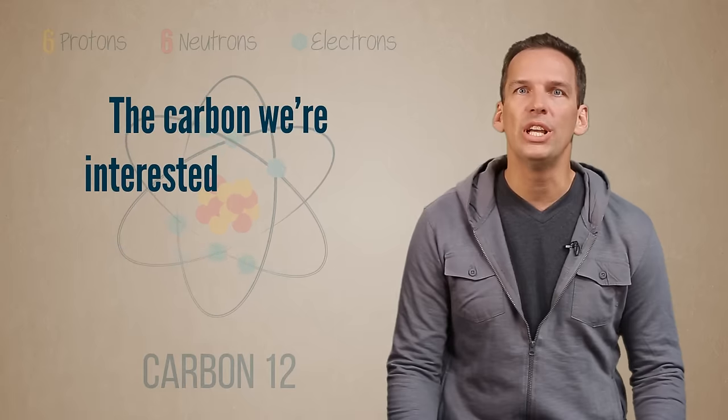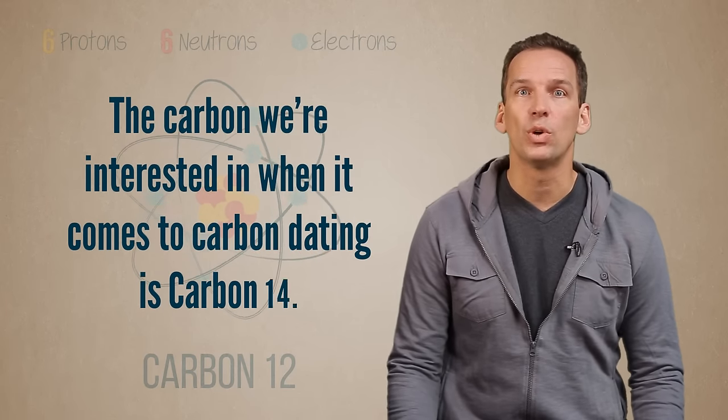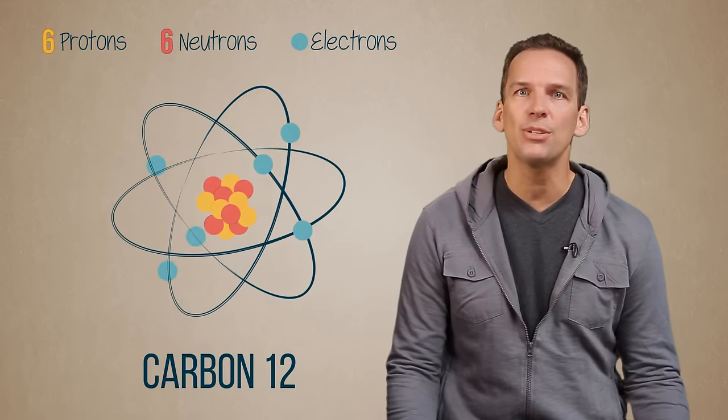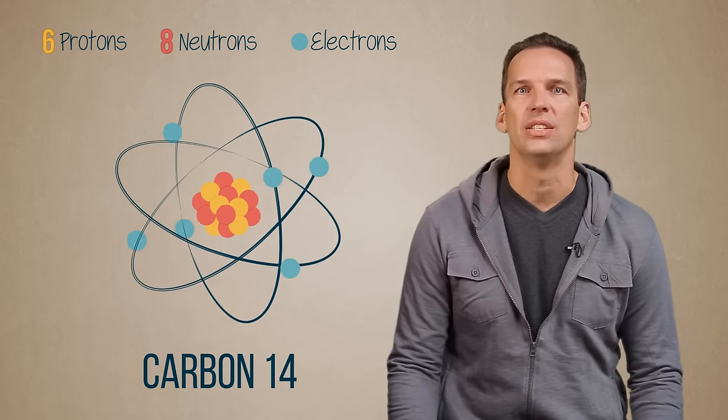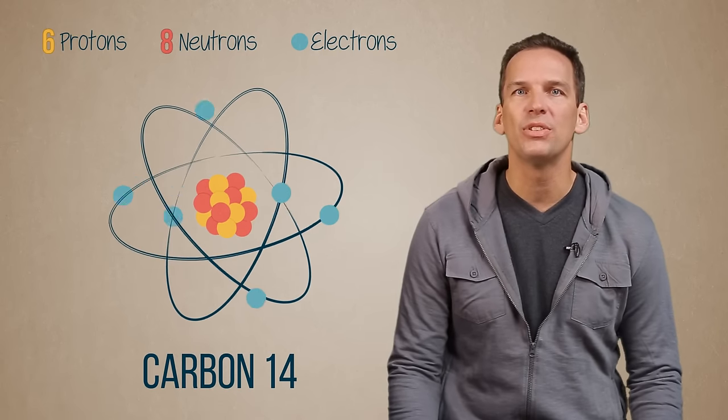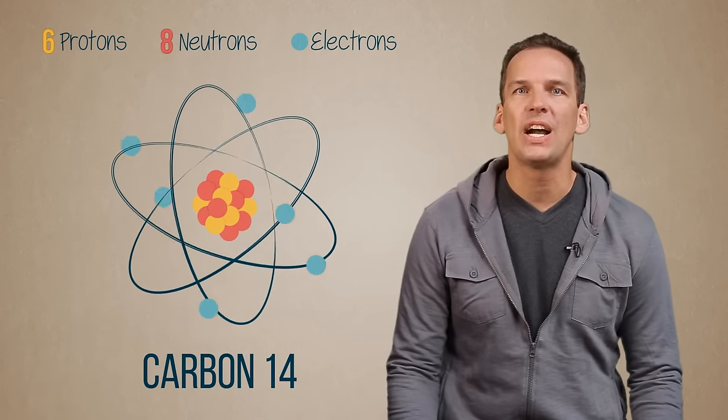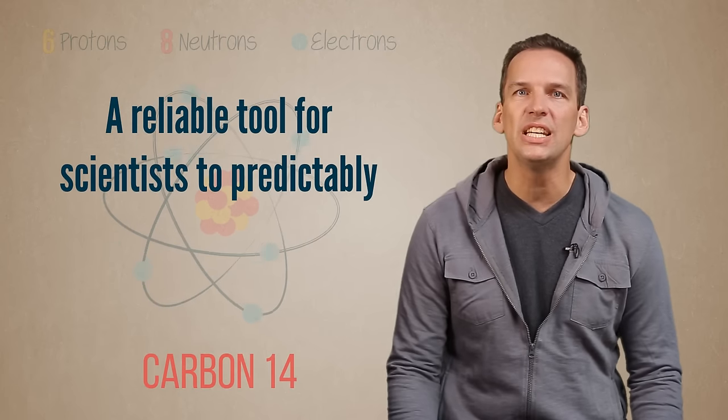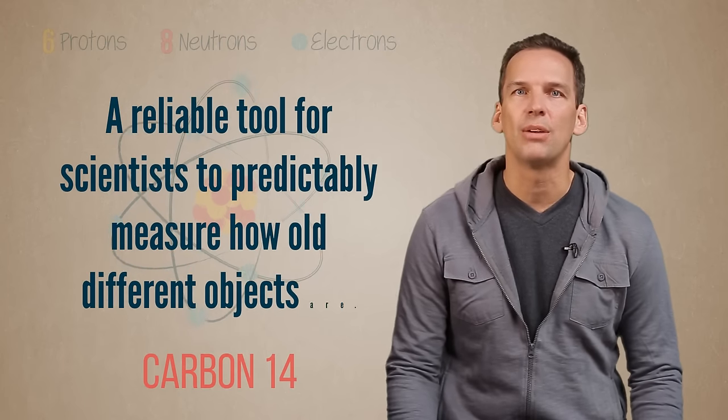The carbon we're interested in when it comes to carbon dating is carbon 14 because it has six protons and eight neutrons. The power of carbon 14 dating is that it provides a reliable tool for scientists to predictably measure how old different objects are.